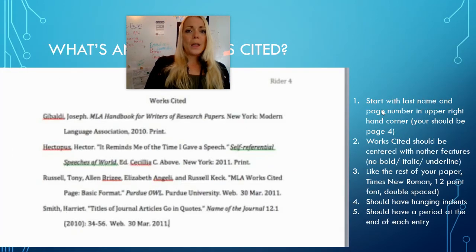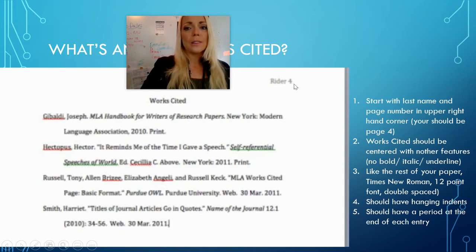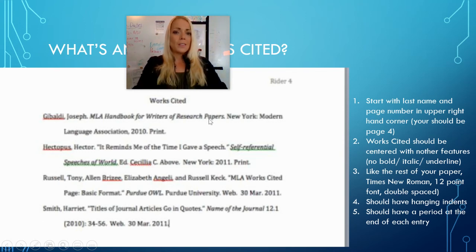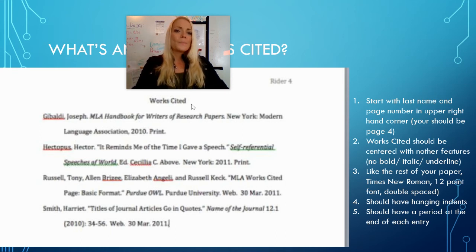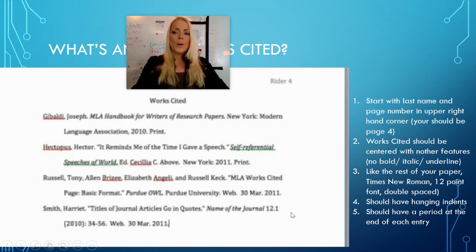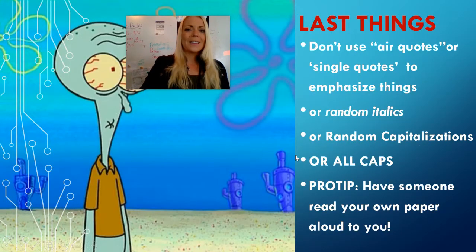In addition to the three pages of content, you also need to have an MLA works cited page. You'll see the student put their last name and page number at the top. Notice it says 'works' with an S — plural — and 'cited' with a D, past tense. It's not 'works cites' or 'works cite' — it's 'works cited.' It should be in alphabetical order by last name, double spaced, 12-point Times New Roman, with hanging indents, which I will show you how to do. You should also have a period at the end of each works cited entry.